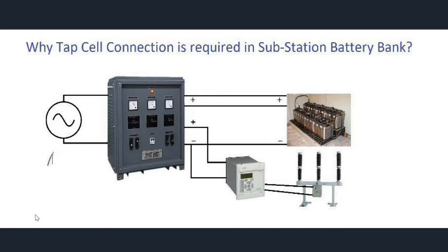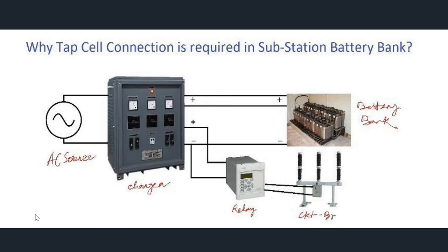The first equipment shown is an AC source which is given as input to the charger. Then the battery bank is connected to the output of the charger, and the other output is connected to the load — that is, relays and circuit breakers. The circuit breakers and relays are given two inputs: positive and negative. But the connections given to the batteries are three: the top one is the positive connection, the lower one is the negative connection, and in between there is another connection which is the tap cell connection.